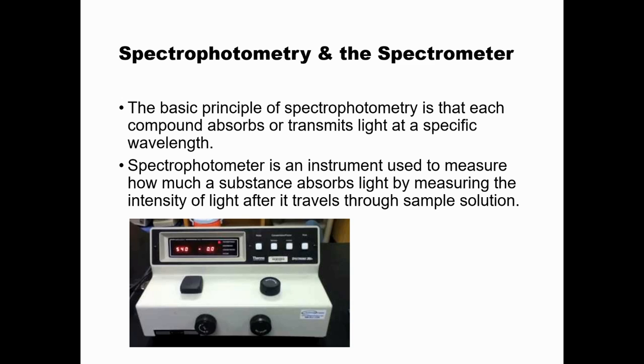Basically, spectrophotometry uses the idea that different compounds have different colors, so they absorb different colors of light and allow other colors to go through them. It can be thought of as a filter of light, and the spectrophotometer uses this by measuring how much light is shined through a compound and then how much light comes back through it.